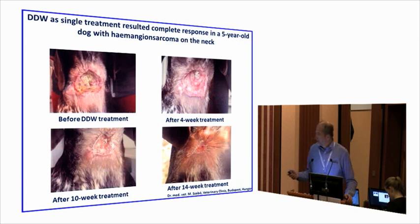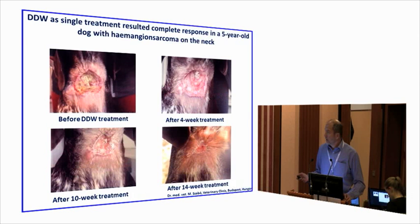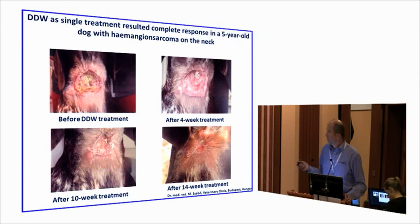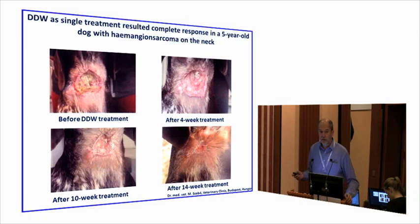Here is another example: a hemangiosarcoma on the neck of a dog. Chemotherapy and radiotherapy had started to kill the animal. Our vet was invited to treat this dog. We started a four-week treatment, then a ten-week treatment, then a fourteen-week treatment — and the dog became completely tumor-free. This is not the only dog treated that way with the same results.